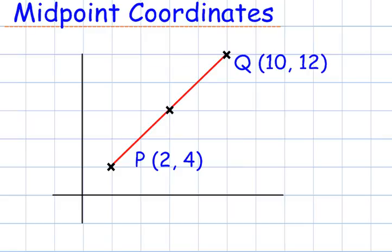Midpoint coordinates. You'll be given a line. In this example, the line starts at point P, which is 2, 4, and ends at point Q at 10, 12. And you'll be asked to find the midpoint of the line PQ.